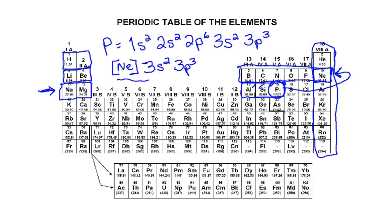So instead of writing out 1s2, 2s2, 2p6, you can just write the previous noble gas in brackets and then write out the row that you're on. You just write down the previous noble gas — the one that came right before it — in brackets, and then write out just the row that you're on.